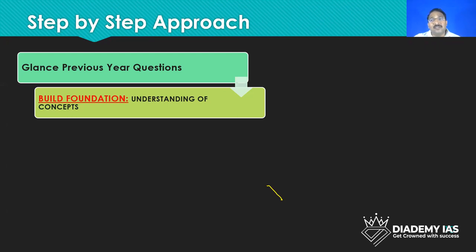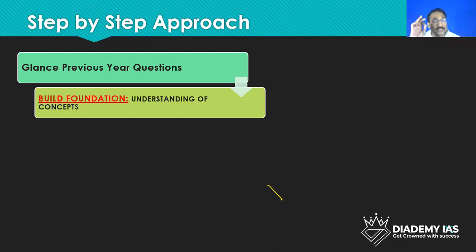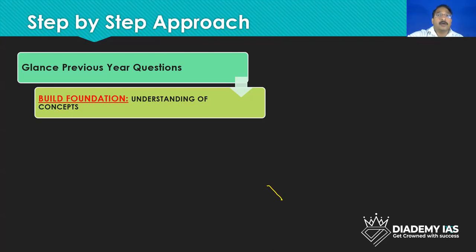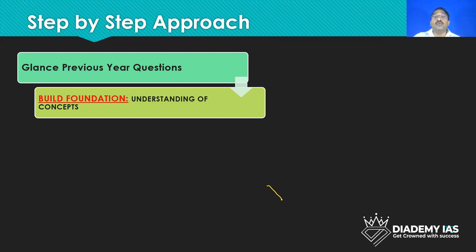What happens if the government puts more money into the infrastructure sector — how does it impact poverty, how does it impact jobs? We need to interlink and understand the concept. If we keep doing this, 50% of the questions we can solve. Nowadays 50% of questions are asked in a manner where you have to be conceptually very thorough. You cannot cram any book — that is not supposed to be done. 50% of questions you can solve only if you have conceptual clarity.